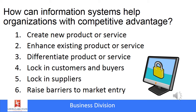For this class, our focus is primarily on how information systems can help organizations get or maintain competitive advantage. Information systems can help with the creation of a new product or service, enhancing an existing product or service, helping an organization differentiate its product or service, locking in customers to make it hard for them to go elsewhere, locking in suppliers, or raising barriers to market entry. There is also a project coming up in which you'll review how an information system helps a business process, which is the focus as we continue through the rest of these chapters.